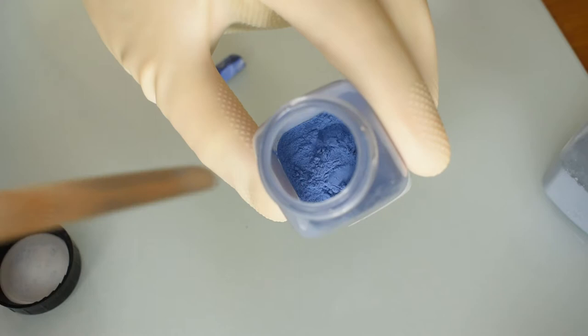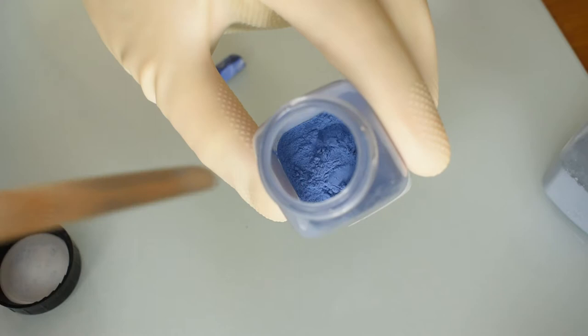For this demo I will be using Kremer pigment medium grade lapis lazuli. I'll first take some powder pigment out of the jar with my palette knife and place it on the glass plate.